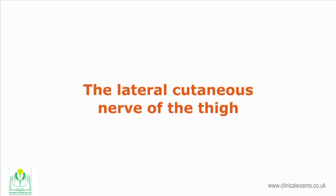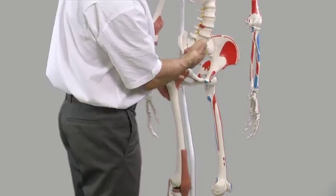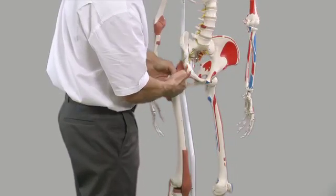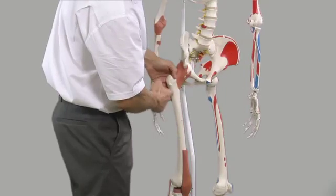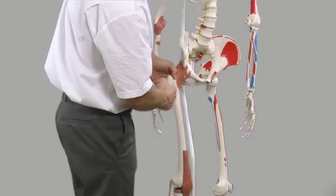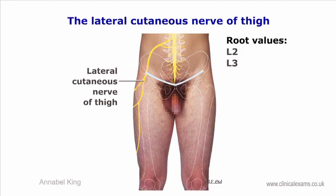The lateral cutaneous nerve of the thigh arises from L2 and L3. It emerges from the lateral border of the psoas major, then passes the lateral part of the inguinal ligament and over the sartorius muscle to supply the lateral part of the thigh with cutaneous sensation.